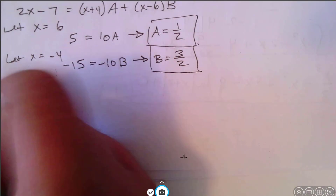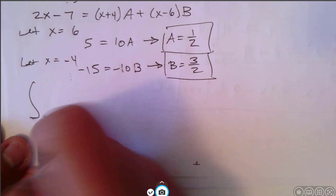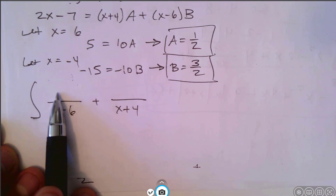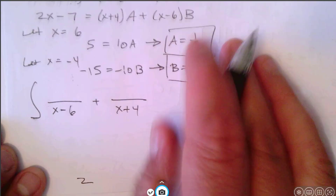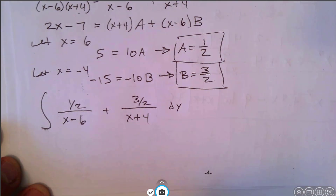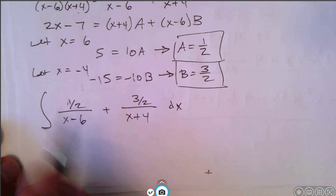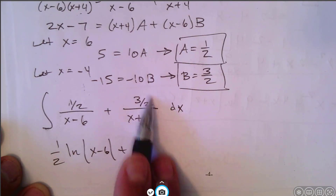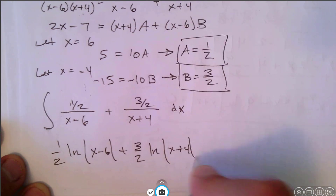We're going to rewrite the integral split into two fractions: one half over x minus 6 plus three halves over x plus 4, dx. I'll put the fractions on top even though it looks like a complex fraction — it makes the integration easier. The antiderivative is one half natural log of x minus 6 plus three halves times natural log of x plus 4, plus c.